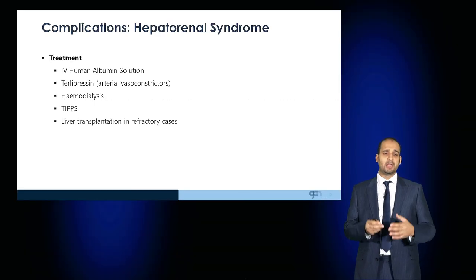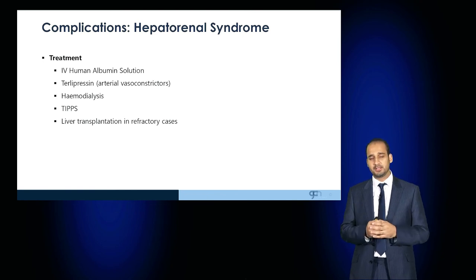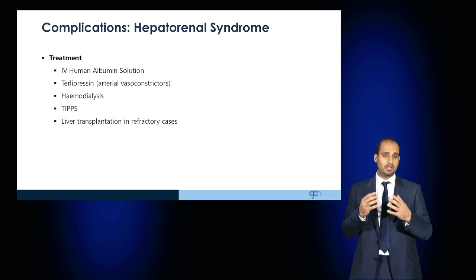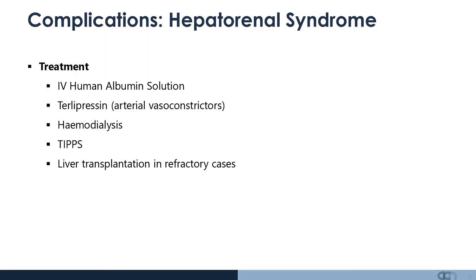If patients develop hepatorenal syndrome, they require prompt treatment with escalation to HDU or ICU, albumin cover, and terlipressin — a vasoconstrictor with limited use in patients with peripheral arteriopathy or coronary artery disease. They may also require haemodialysis, a TIPS procedure, or liver transplantation.